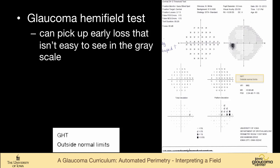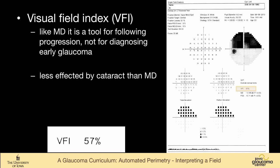Sometimes it will pick up early loss that's not that easy to see in the grayscale, like in this patient. You can see that the glaucoma hemifield test is outside normal limits. If you were just looking at the grayscale and you weren't looking at the raw data and the pattern deviation, you might miss the fact that this person has visual field loss.